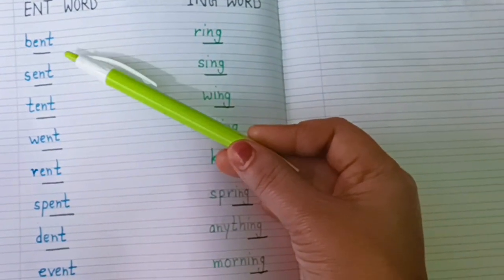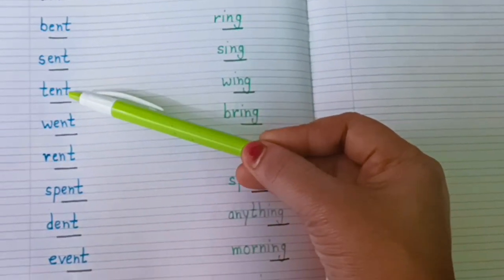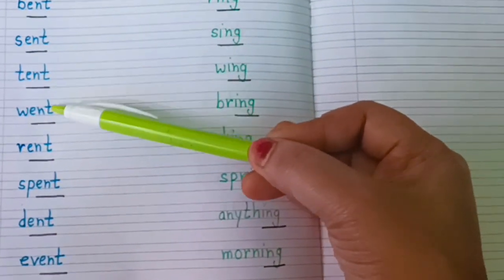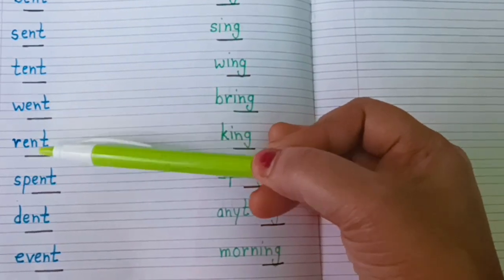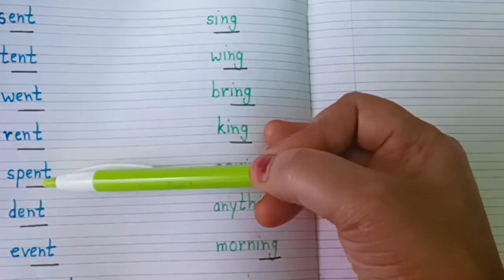Let's start with them. B-ENT bent, S-ENT sent, T-ENT tent, W-ENT went, R-ENT rent, SP-ENT spent.